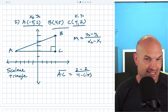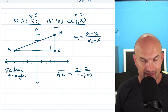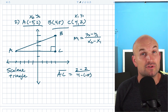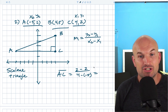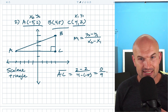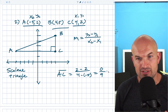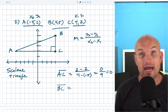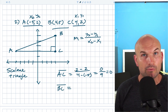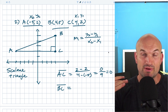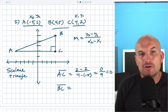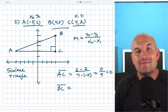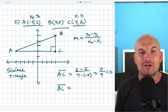A big mistake students will make is they won't use parentheses. Make sure you're putting parentheses around that negative five, because then you notice you actually have a double negative — it's four minus a negative five, which is actually adding. So two minus two is going to be zero, giving zero over nine. Zero over nine is just going to be zero. Remember, when the slope is zero, that verifies we have a horizontal line. The Y coordinates are the same, so we already know it's horizontal — but I'm still showing you the algebraic way.